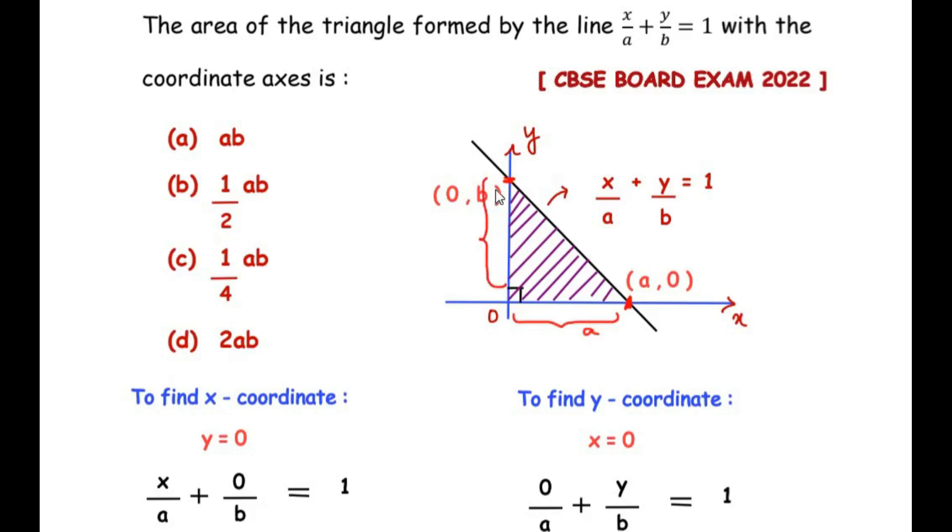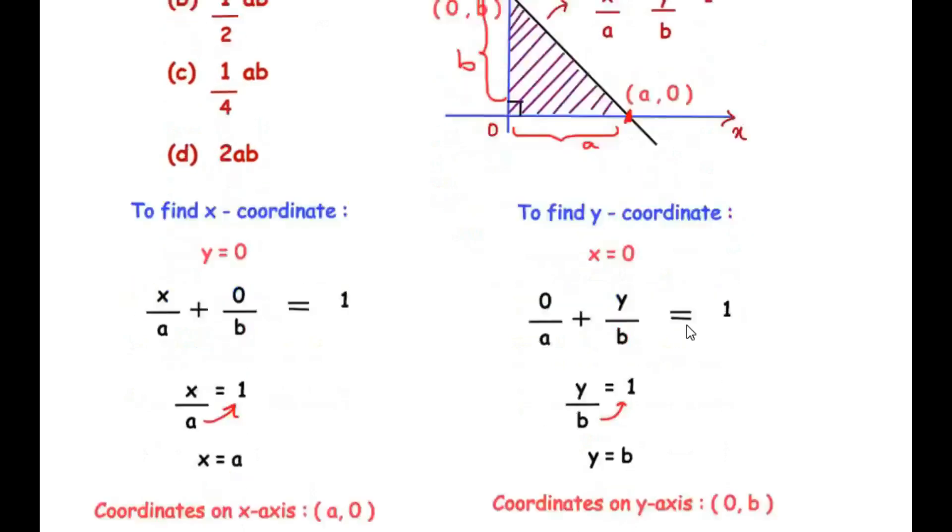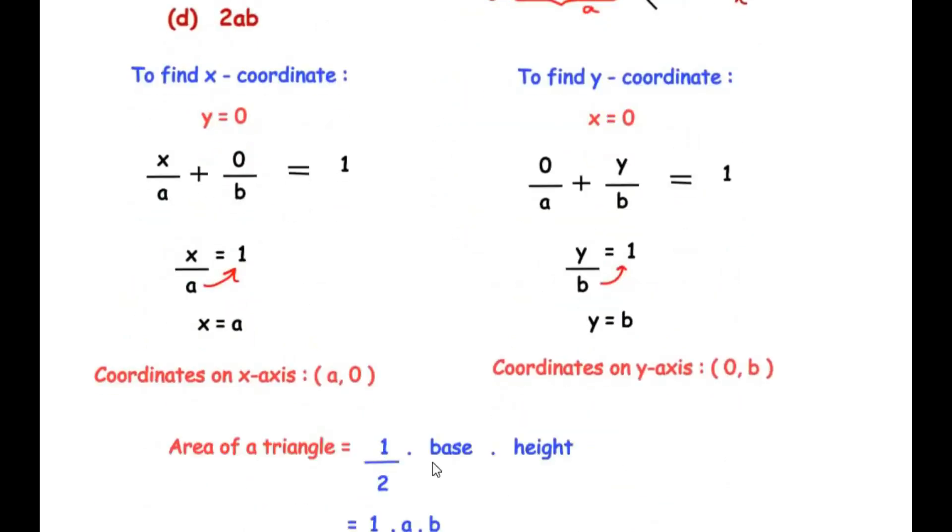So we have the area of triangle as, the formula is 1 over 2 times base times height. And the base was a and the height of the triangle was b.